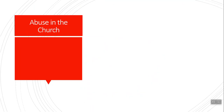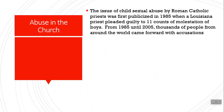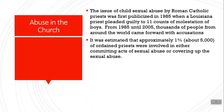Abuse in the church: because Father Flynn is accused of abusing Donald Mueller, you have to know the background. The issue of child sexual abuse was first publicized in 1985 when a Louisiana priest pleaded guilty to 11 counts of molestation of boys. From 1985 until 2005 and really into today, thousands of people from around the world came forward with accusations. It was estimated that approximately 1% of ordained priests were involved — because of the numbers, you're talking about 5,000 ordained priests who were either involved in committing acts of sexual abuse or covering it up.